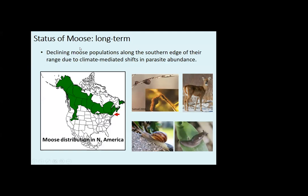The status of the moose population long-term: across moose range, there are declining moose populations along the southern edge of their range. It's been widely reported — it's due to climate-mediated shifts in parasite abundance. Here in New Hampshire it's shifts in winter tick abundance and also in brain worm. In other areas, it's different parasites, but you're also seeing changes in abundance there as well.